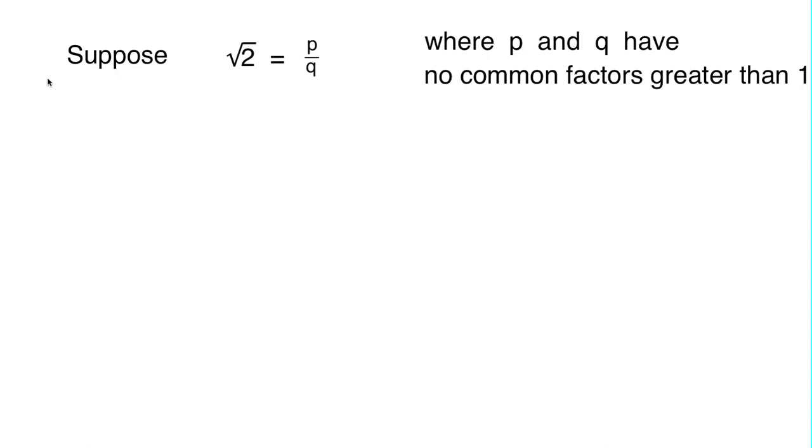So let's start by supposing that it can. Suppose you can write the square root of 2 as a fraction, say p over q, where p and q are whole numbers, and not only that, but we've got it in lowest terms. We divided out all the common factors, so we can say that p and q have no factors greater than 1 in common.